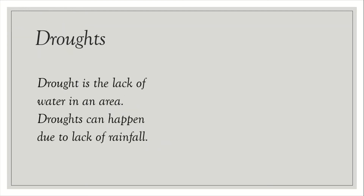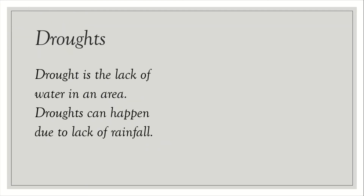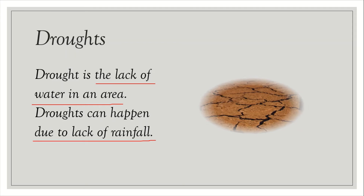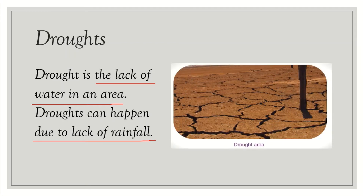Drought. Drought is the lack of water in an area. Drought can happen due to lack of rainfall. This is a picture of a drought area.